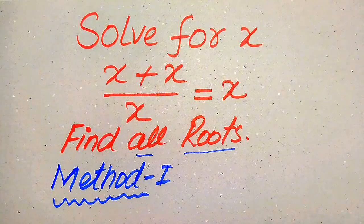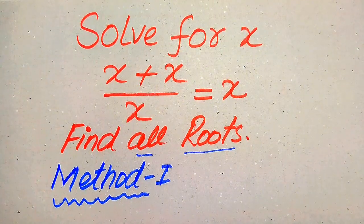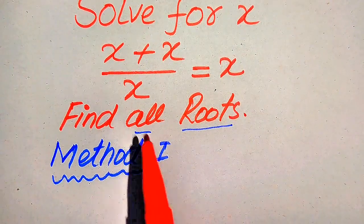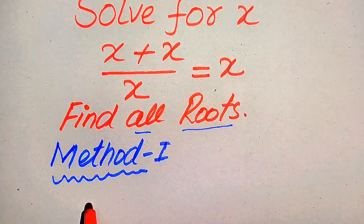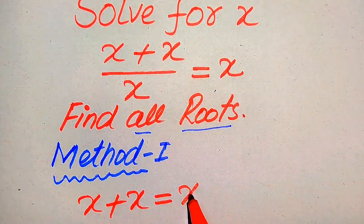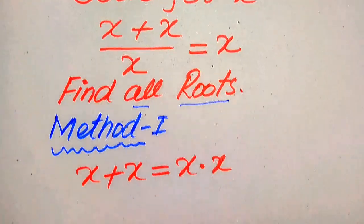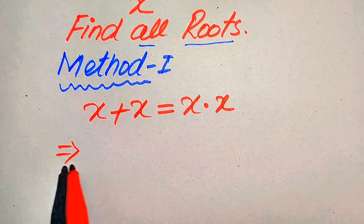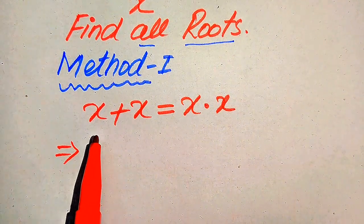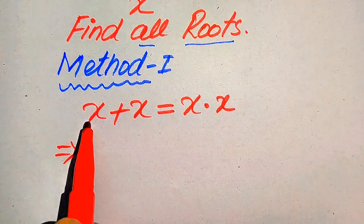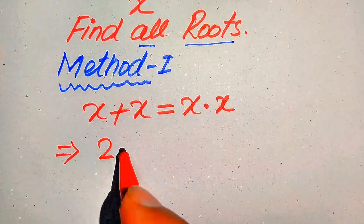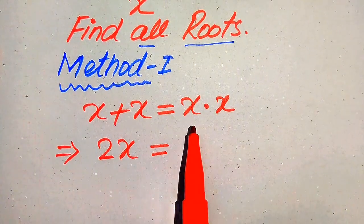In the first method, the first thing we are going to do is move this x to the right-hand side. So when we move this x to the right-hand side, it becomes x plus x equals x times x. We know that when two like terms are added, we add the coefficients — the coefficient of each x term is 1.